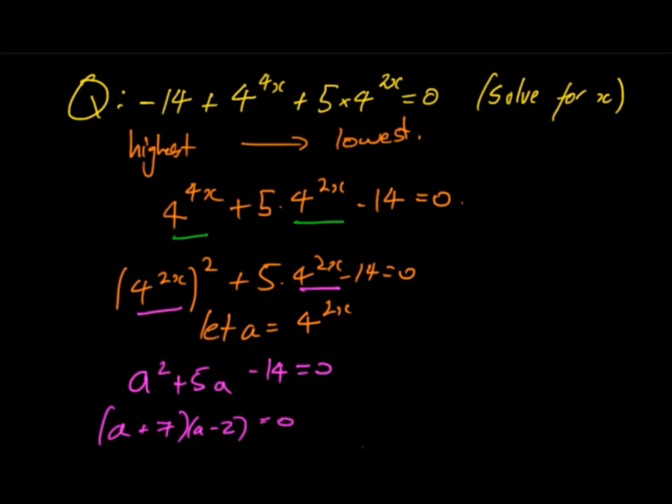Then we put these back in and we say that 4^(2x) = -7 and 4^(2x) = 2. That's because a was equal to those values. Now 4^(2x) has to be greater than 0. Therefore 4^(2x) cannot be -7. So the only solution is 4^(2x) = 2.